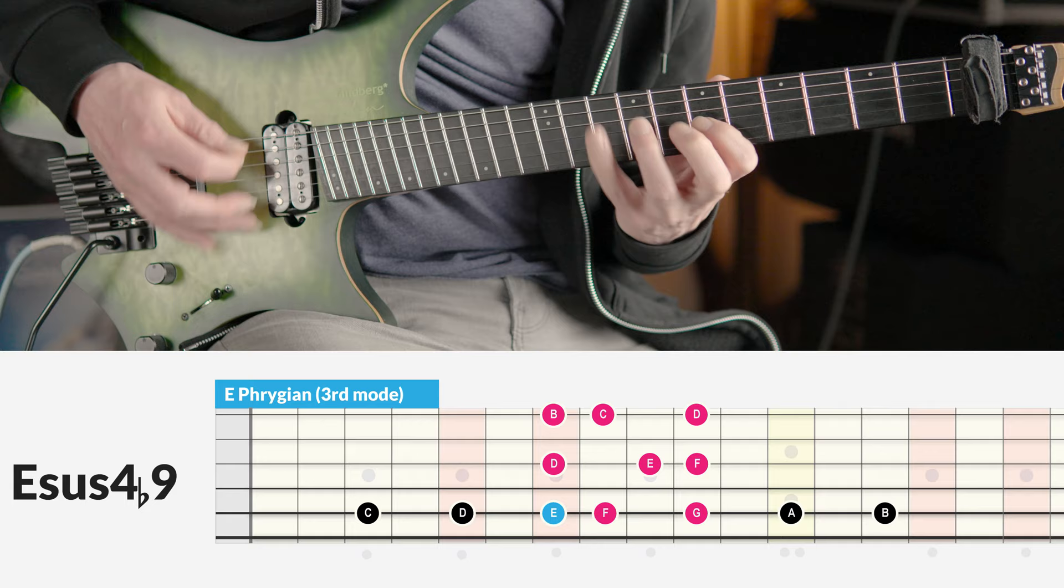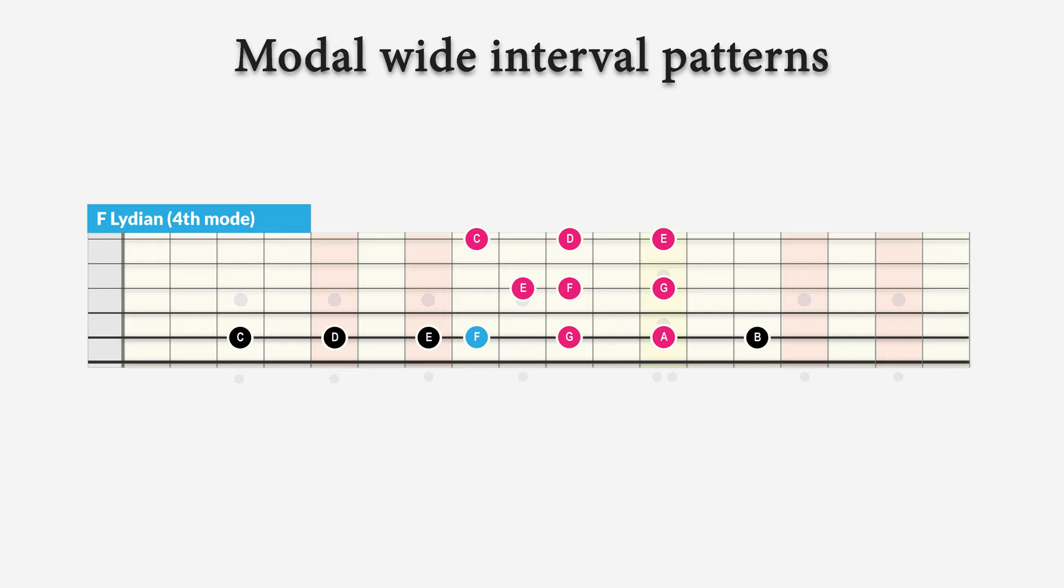Starting the C major scale on the fourth note gives us the F Lydian mode. This is an F major scale with an augmented fourth degree, the note B. Now we play this wide interval scale pattern over an F major 7 sharp 11 chord.